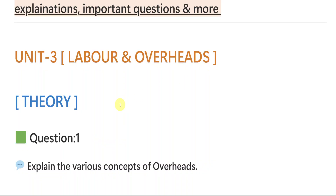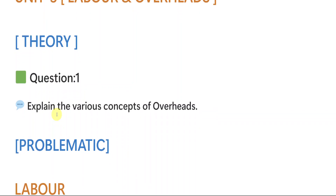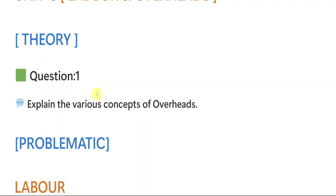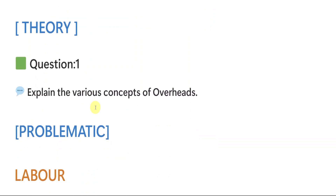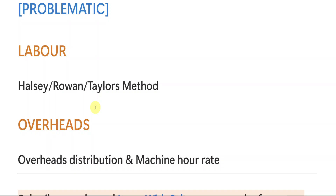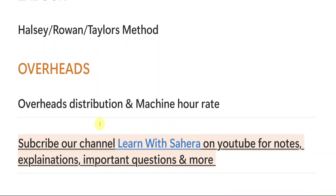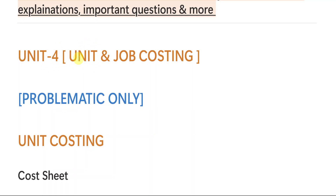Unit number three is Labor and Overheads. There is almost no chance for theory here, though occasionally you may get one theory question — explain the various concepts of overheads. Just give it a reading. For the problematic section, the question has two parts: Part A is labor (Halsey, Rowan, and Taylor's method) and Part B is overheads (overheads distribution and machine hour rate). My suggestion is that overheads is very easy, so if you get perfect with overheads you will be able to attempt the eleventh question of your paper.